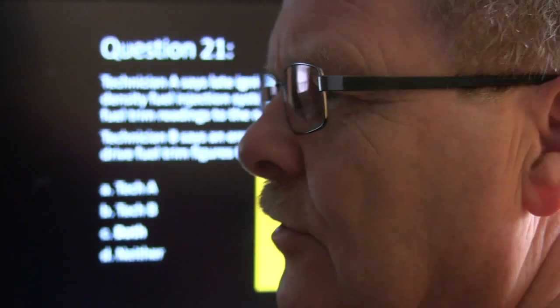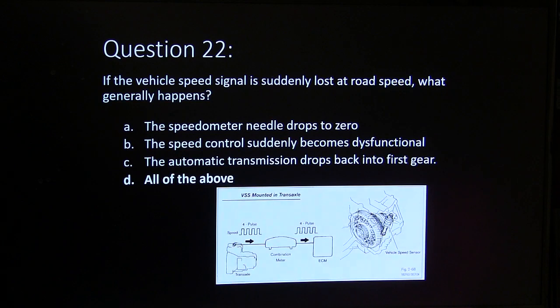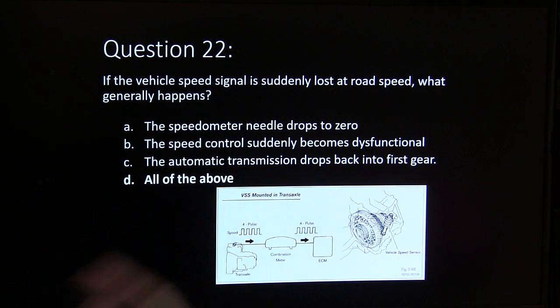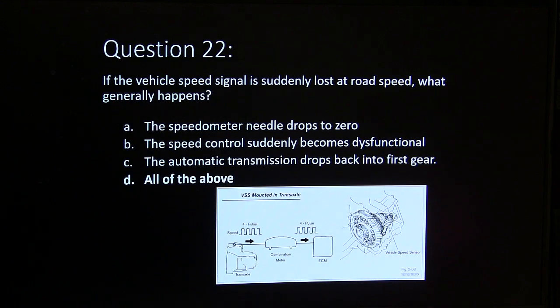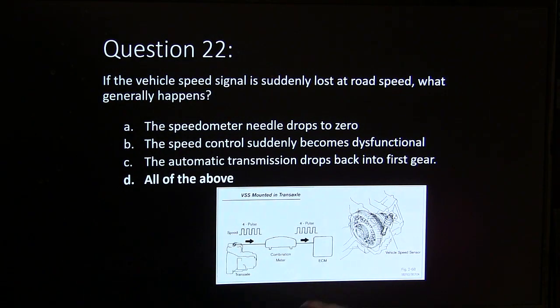If the vehicle speed signal is suddenly lost at road speed, all of the above can happen — the speedometer needle drops to zero, speed control becomes dysfunctional, and anything else that depends on the vehicle speed signal.